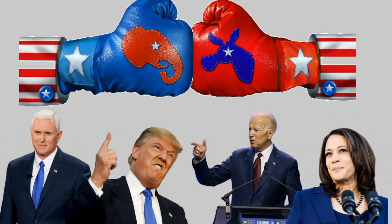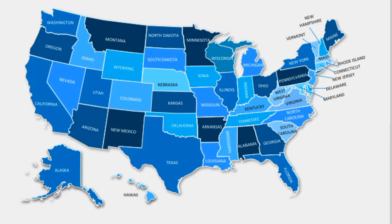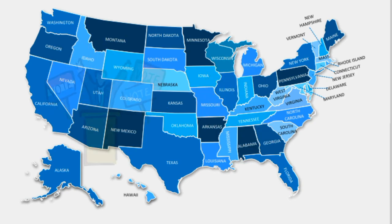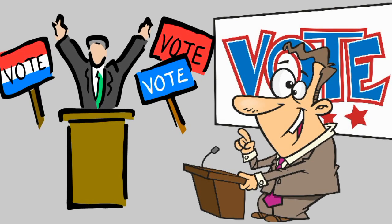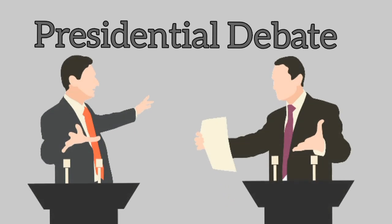Once both parties finalize their presidential candidates, the general election campaign kicks off. Presidential candidates from both parties travel the country, explain their views and plans to the general population, and try to win the support of potential voters. Rallies, debates, and advertisements are a big part of the general election campaign. A presidential debate is a public debate held between presidential candidates during this period.